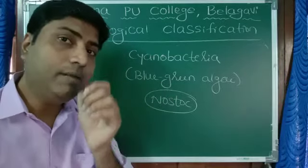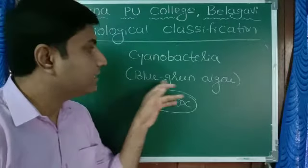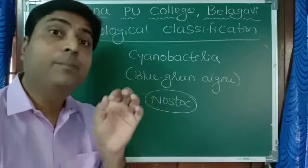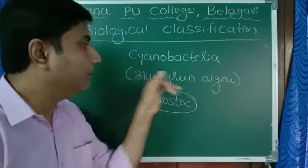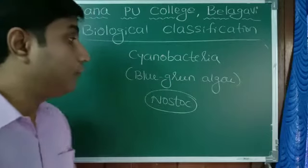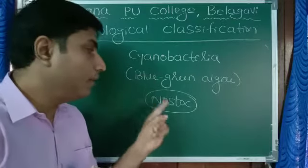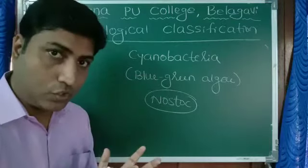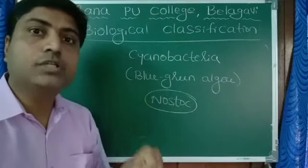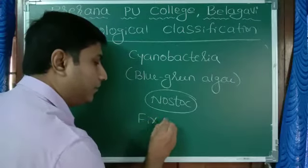Actually they are very minute but they occur in colony so you can see them. Those Nostoc are example for blue-green algae and they contain pigment in them. Because of the pigment and the color blue-green, they carry out the process of photosynthesis. They prepare their own food. At the same time one more advantage of this Nostoc, Nostoc can fix atmospheric nitrogen into the soil, so we call it fixation of nitrogen.